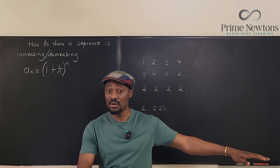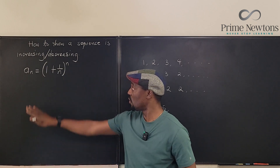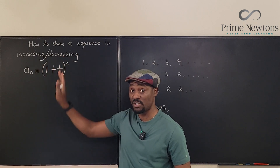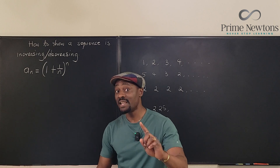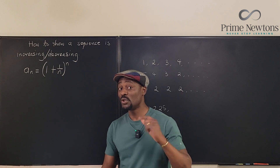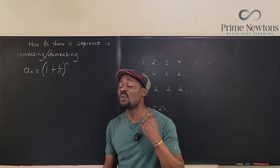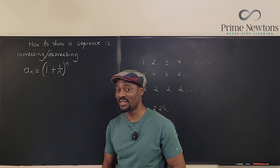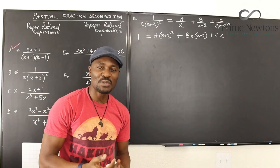Here are the three ways to show that a sequence is monotone or monotonic — increasing, decreasing, or constant. I'm going to choose one of the methods because I would like to use Bernoulli's inequality.